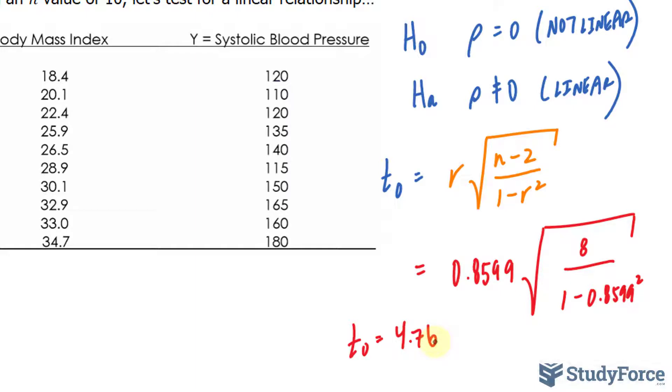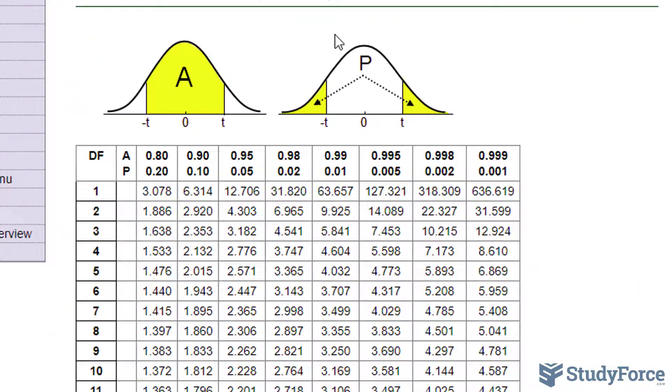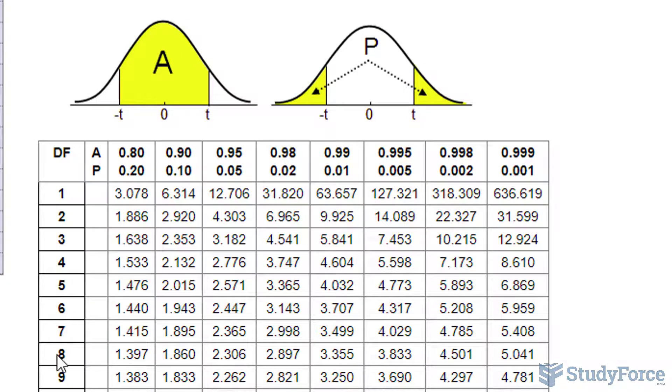Now we have to make our decision by comparing this with t critical. And t critical is found in the table, we'll be using an alpha value of 0.05 and degrees of freedom of 8. So t critical is based on an alpha value of 0.05 and degrees of freedom of 8. That's done by subtracting 10 minus 2. In the table, which is always a two-sided table for linearity, you get 2.306.